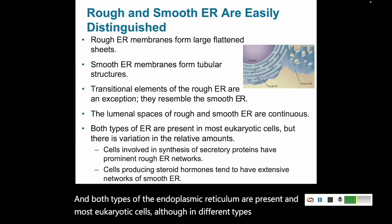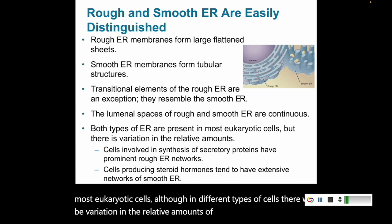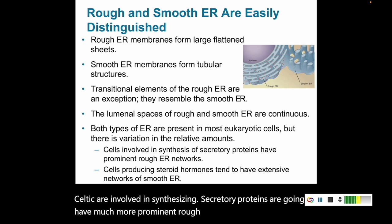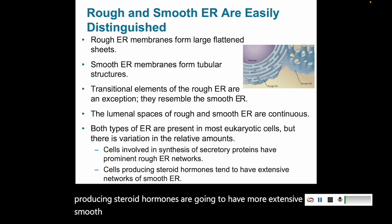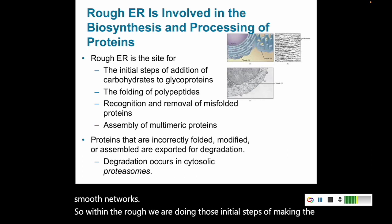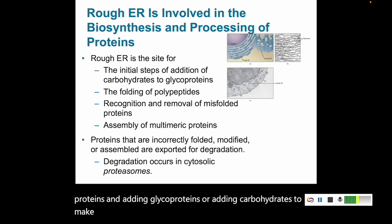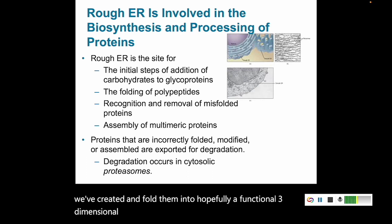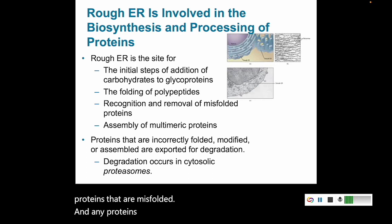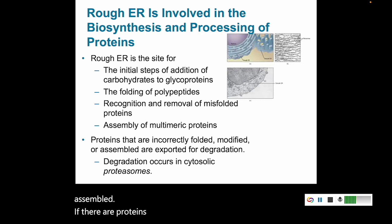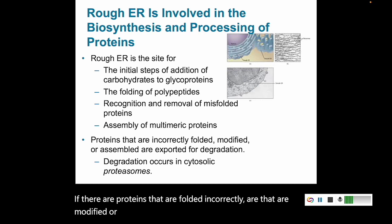In different cell types, there will be variation in the relative amounts of these membranes. Cells involved in synthesizing secretory proteins have much more prominent rough ER networks, while cells producing steroid hormones have more extensive smooth ER networks. Within the rough ER, we do the initial steps of making proteins, adding carbohydrates to make glycoproteins, folding polypeptides into a functional three-dimensional shape, removing misfolded proteins, and assembling multimeric proteins. Misfolded proteins are sent to cytosolic proteasomes for degradation.